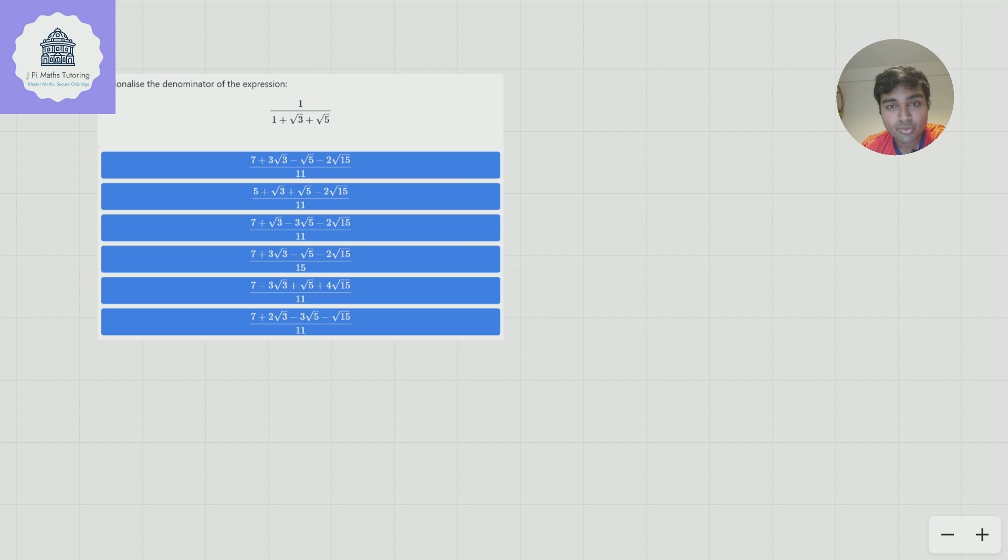We want to rationalize 1 over 1 plus root 3 plus root 5. Now why wouldn't this come up in an A-level exam? Well basically because we normally only have like one square root thing in the denominator, so how do we go and deal with it when there's two?